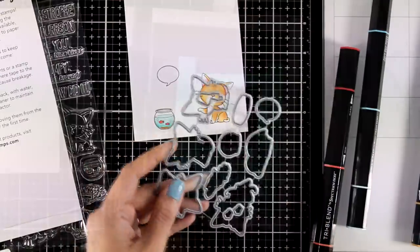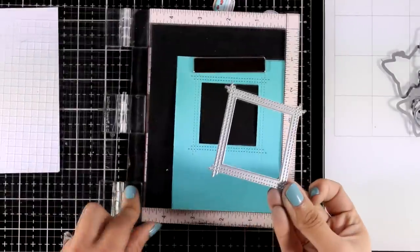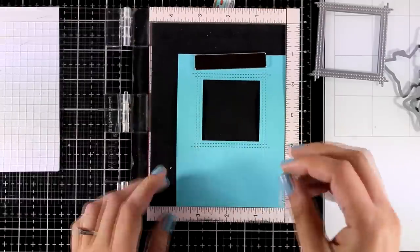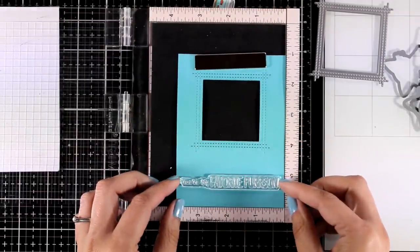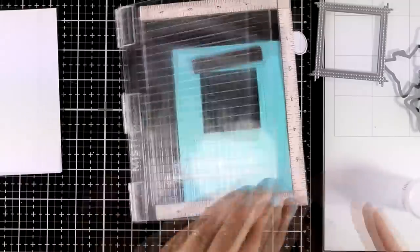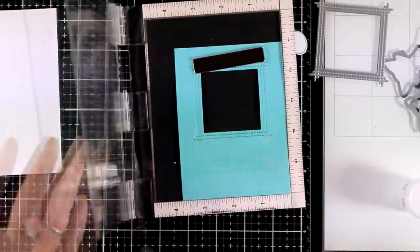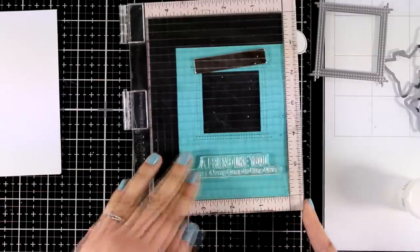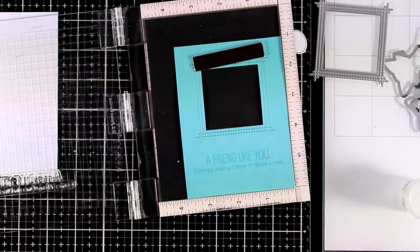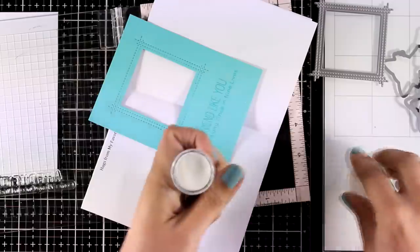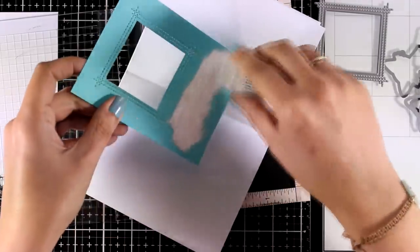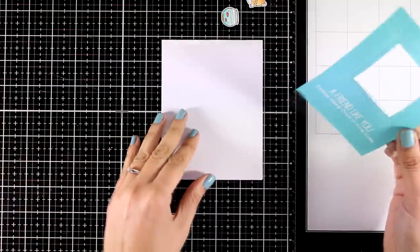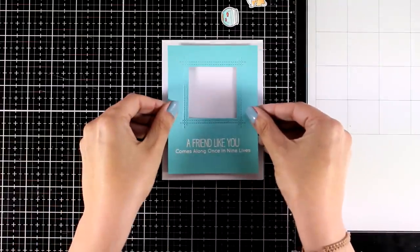Now to put my card together I created this panel using this die. This is an older die by My Favorite Things, it is a peekaboo stitched window. It is one of my favorites, I use it all the time and you have seen this featured in previous videos for sure. Now I am going to stamp my sentiment from the same stamp set as the cat and for that I am going with embossing ink and I will apply white embossing powder, heat set it and I have a lovely sentiment to go with the cat.